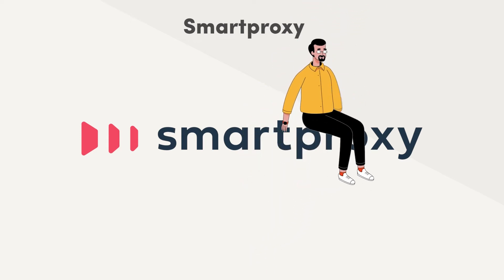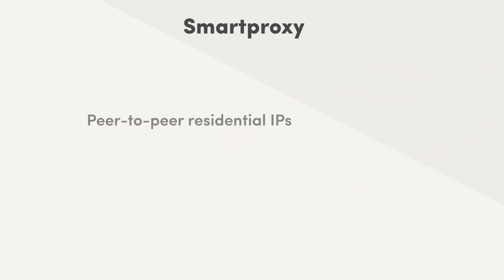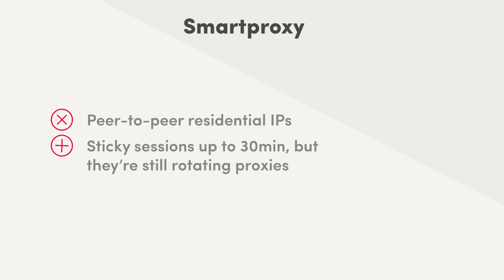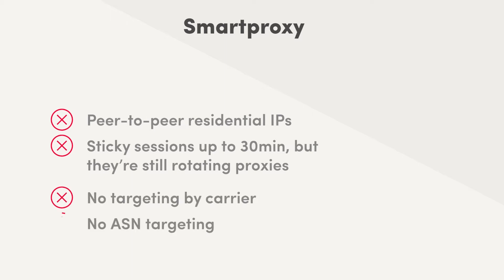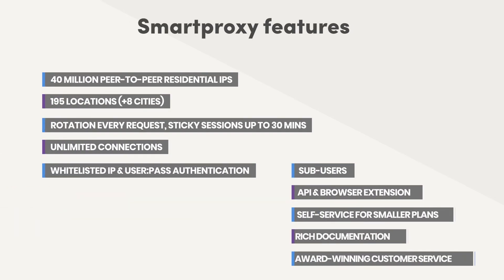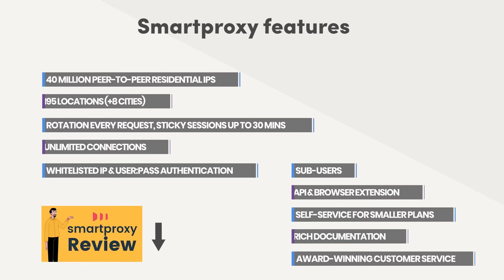But Smart Proxy isn't perfect for everything. These are still peer-to-peer residential IPs — you can create sticky sessions for up to 30 minutes, but they will rotate. You also can't target IPs by carrier or ASN, though that isn't a must. Here's a list of the most important Smart Proxy features, and if you don't like reading, just watch the Smart Proxy review instead.